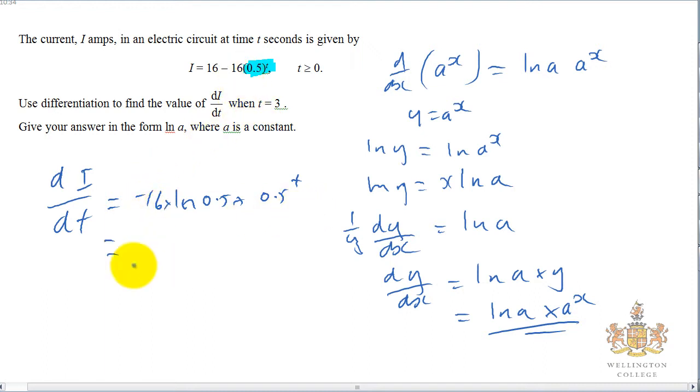And we want to find this out when t equals 3. So when t equals 3, dI by dt is equal to minus 16 times by the natural log of 0.5 times by 0.5 to the 3.